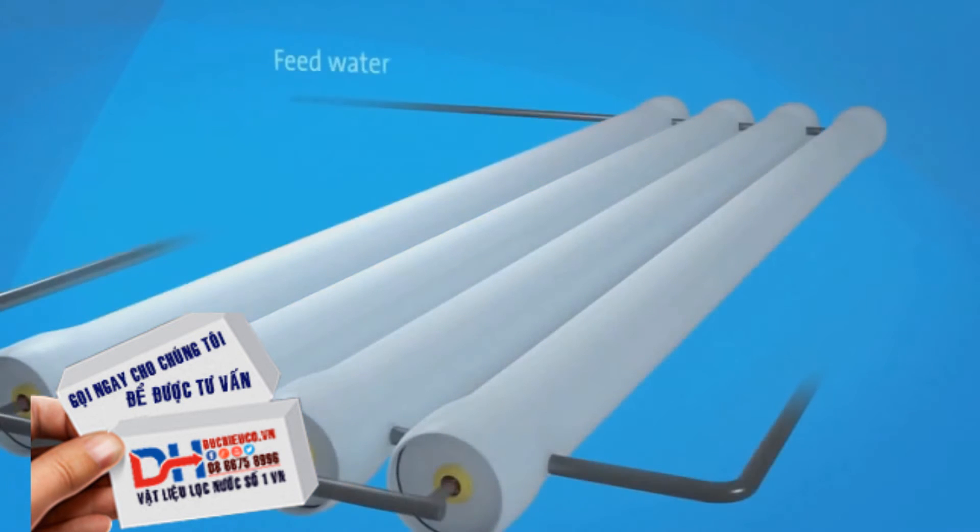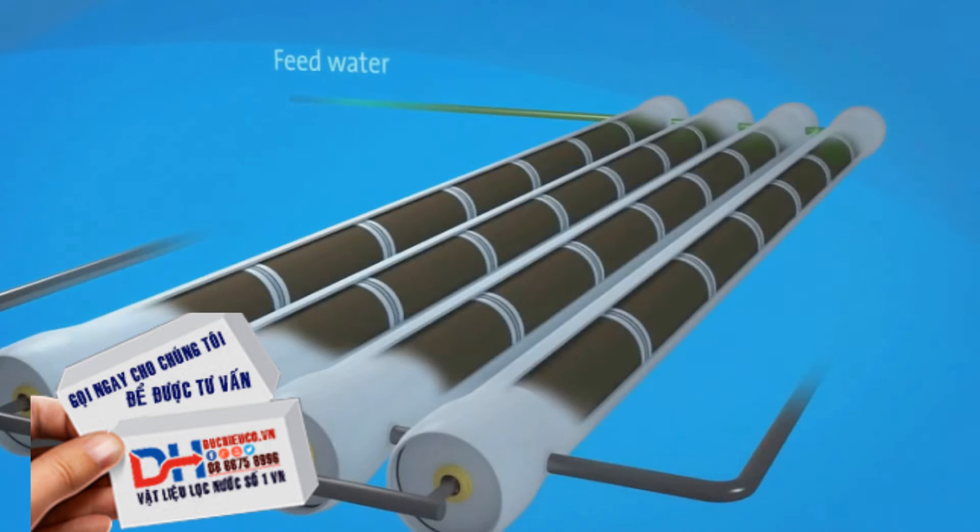Feed water is pumped at high pressure into the vessel. As it travels, small molecules like water pass through the membrane, while larger particles such as salt, bacteria and viruses do not. The final recycled water product is collected from the end of the elements.